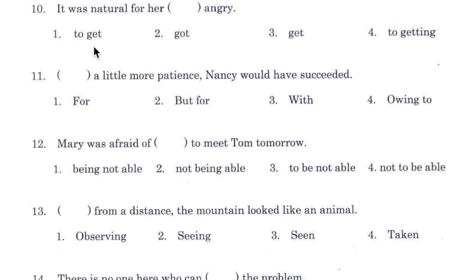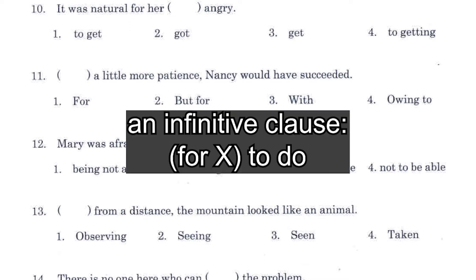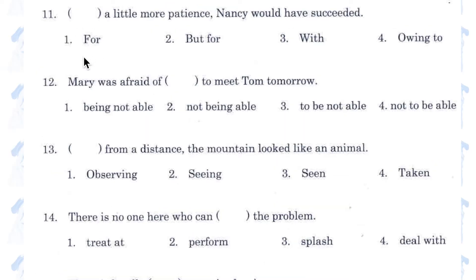Number 10. 'To get.' This clause, headed by the preposition 'for', is an infinitive clause, and in an infinitive clause, the verb has to be preceded by the word 'to'. Number 11. 'For / but for / with / owing to a little more patience, Nancy would have succeeded.' Since the main clause says 'would have', it implies that Nancy in fact didn't succeed. So we need number 3: 'with a little more patience'.